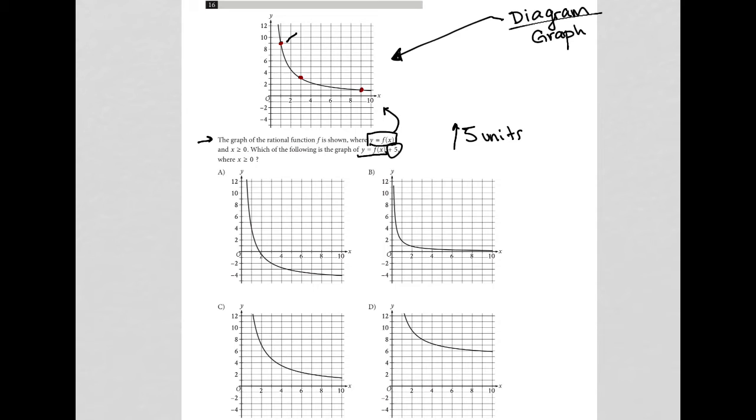Because this point here that was at 1 comma 9 should now be at 1, 14. So when we're at 1 here, that's not 14. So a is gone.